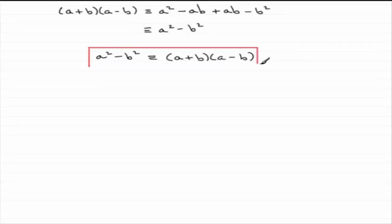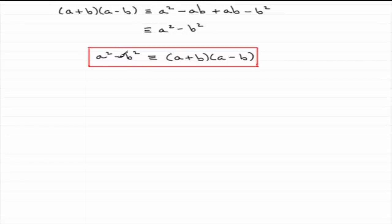This is a result I would encourage you to learn, and it is called the difference of two squares. Why is it called the difference of two squares? Well, we've got the difference sign here — the minus sign. It's the difference between a, which is squared, and b, which is squared. The difference between two squares. And it has this pattern structure.